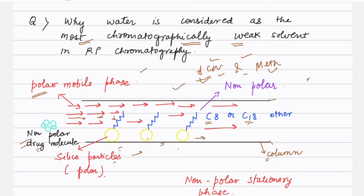Late eluting peaks tend to have some tailing, and it is best to have a shorter elution time in any method. So adding ACN or methanol also has an advantage over water. This is the reason why water is considered the most chromatographically weak solvent in reverse phase chromatography.